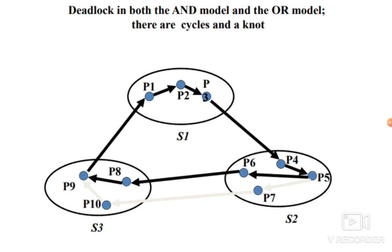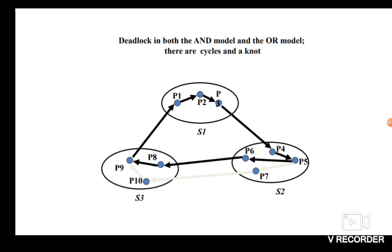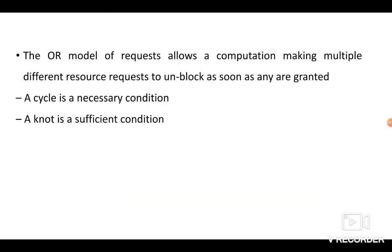In the second diagram, we again have a cycle P1 → P2 → P3 → P4 → P5 → P6 → P8 → P9 → P1, indicating a deadlock in the AND Model. Additionally, we have a knot: P5, P7, P10 also form a cycle back to P9. This knot indicates deadlock in the OR Model. So in the OR Model, a cycle is a necessary condition but a knot is the sufficient condition for deadlock.